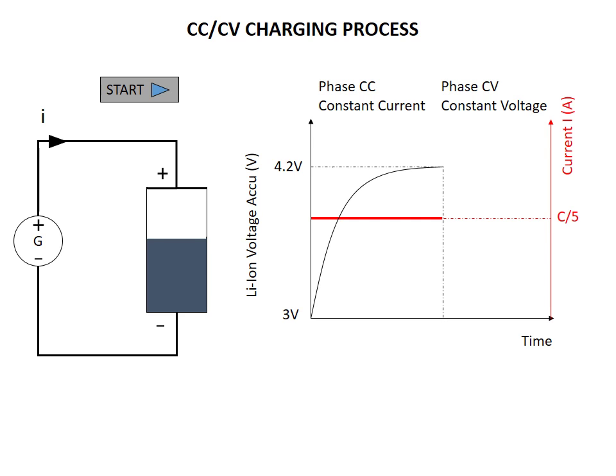Now we get into the second step. We are forced into the constant voltage step because we reached the high voltage protection value. During the constant voltage step, we apply, thanks to the power supply generator, a stabilized voltage of 4.2V. And we can see that doing that, we are decreasing slowly and slowly the current.